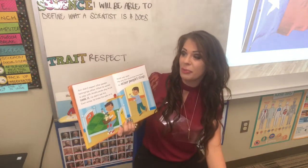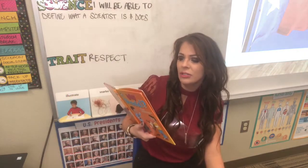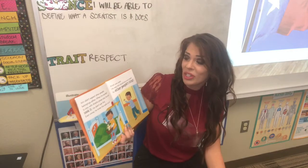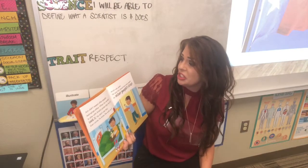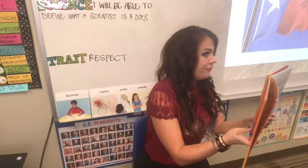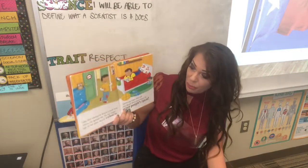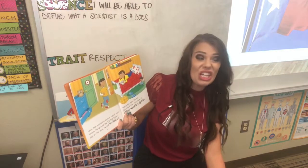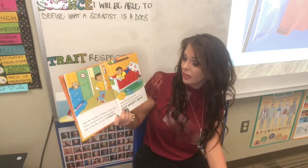Aaron didn't respect other people's belongings. When he wanted to play with Anish's pirate ship, he just took it — he didn't ask first. He broke the sails on it. Anish said Aaron should show more respect for other people's things. Later, Aaron wanted to borrow a book from Vanna. He ignored the 'do not enter' sign on her door and just walked in. Vanna was angry — she said Aaron should show more respect for other people's space.